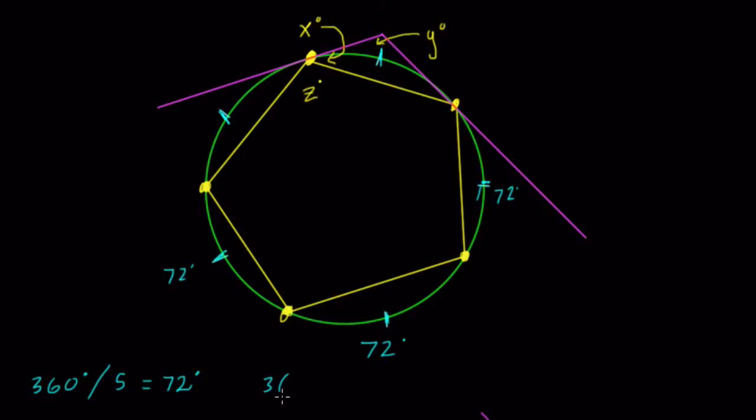We do 3 times 72. Three times 70 is 210, plus 3 times 2 is 6. That's 216 degrees. Z equals half of 216 because 216 is the total arc that inscribed angle Z intercepts. So one half of 216 is 108 degrees.